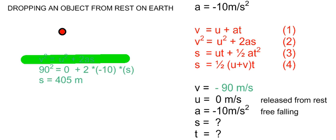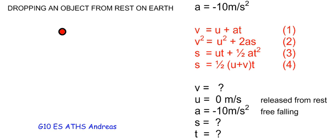Remember that this excludes air resistance. To summarize: dropping an object from rest on Earth means it is subject to an acceleration of 10 meters per second squared, irrespective of its mass, provided we ignore air resistance. Its motion can be described using the four kinematics equations, whereby initial velocity and acceleration remain constant, and V, S, and T vary simultaneously. Knowing any one of these three variables will enable you to find the other two using the kinematics equations.